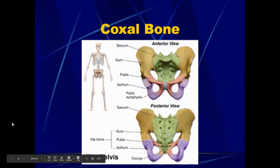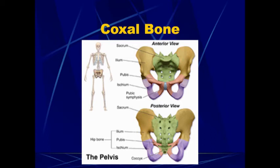This is just showing an anterior view of the coxal bone and the three bones that make it up, along with the sacrum. And then a posterior view of the same thing.